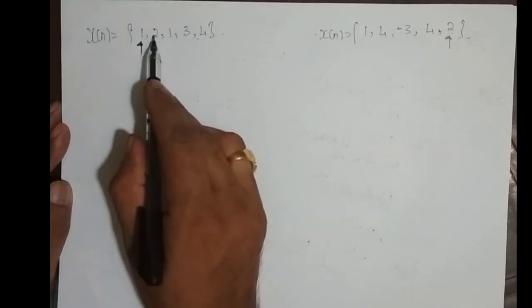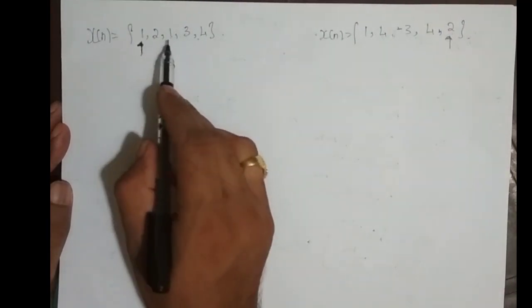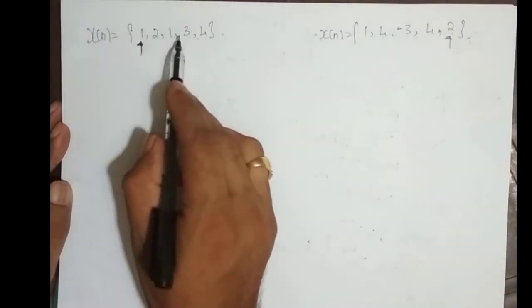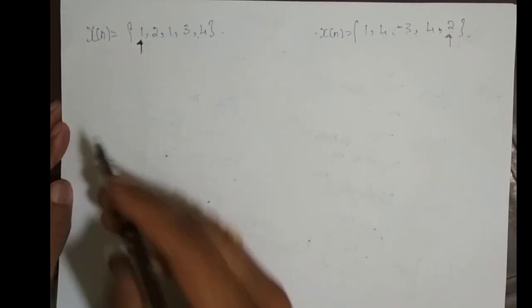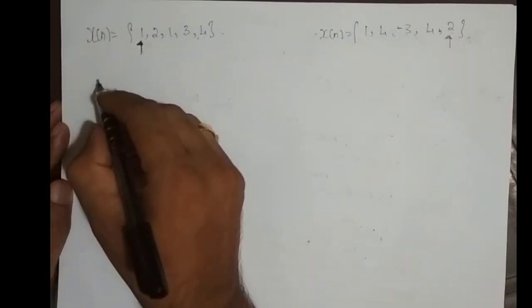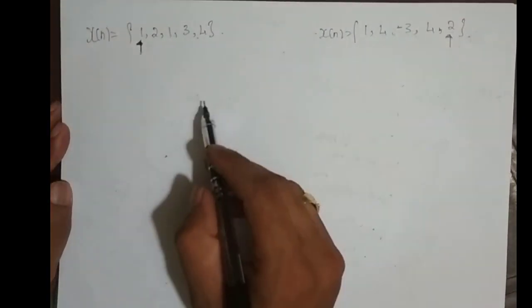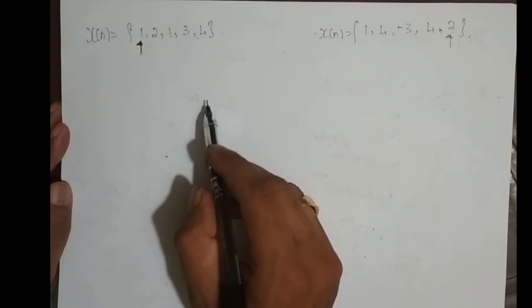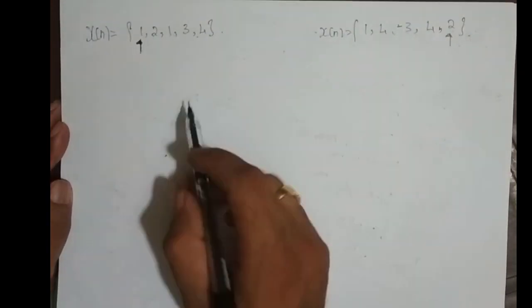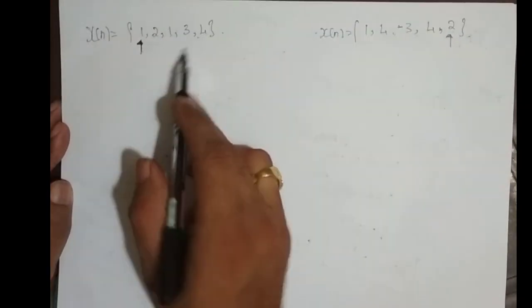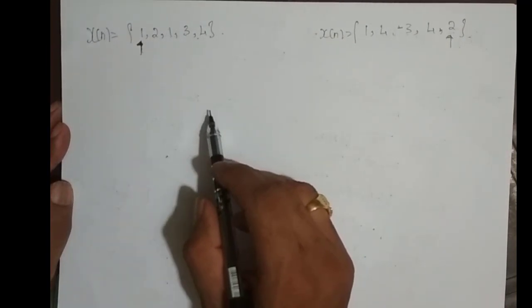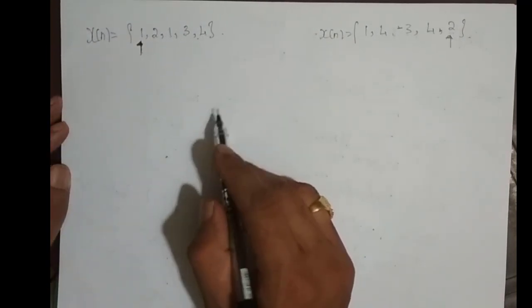So X(0) = 1, X(1) = 2, X(2) = 1, and the last sample is 4. By looking at the sequence, I can directly state the ROC. What is the ROC of a finite length right-sided sequence? It is the entire Z-plane except at Z equal to 0.